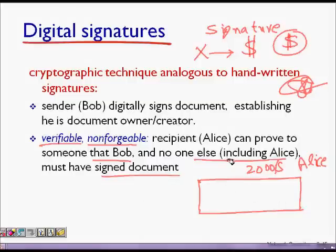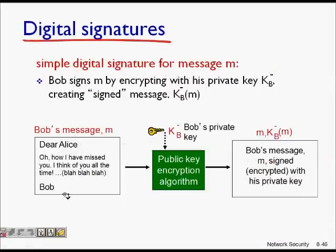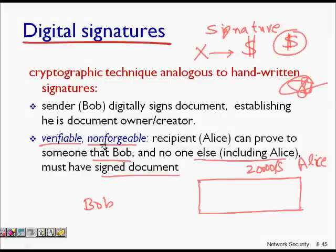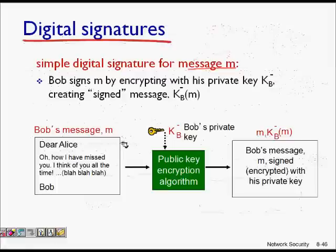Even if Bob signed a check of twenty thousand dollars, he cannot later say that he did not sign the document. So these three things are very important for a digital signature: it is verifiable, it is non-forgeable, and it is non-reputable — meaning I cannot go back and say I didn't give you a prize and that this is not my sign.